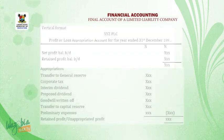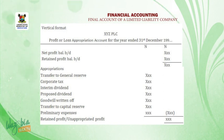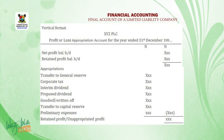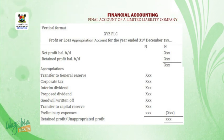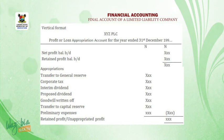We now move to the vertical format of the profit or loss appropriation account. The heading is: XYZ PLC, profit or loss appropriation account for the year ended 31st December 19--. We start with net profit for the year, add retained profit of last year to get a sub-total. We then list the appropriation items: general reserve, corporate tax, interim dividend, proposed dividend, preliminary expenses, and capital reserves. These are added together and deducted from the sub-total. The final result is the retained profit or unappropriated profit for the year.